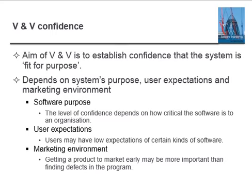The aim of V&V is to establish confidence that the system is fit for its purpose. This depends on system purpose, user expectations, and the marketing environment. The level of confidence depends on how critical the software is to an organization. Users may have low expectations of certain kinds of software, and getting a product to market early may be more important than finding every defect.